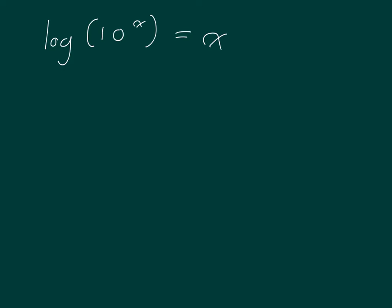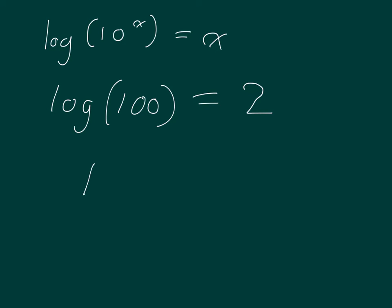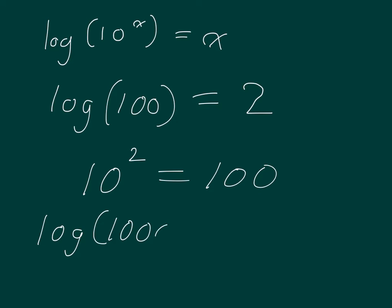For example, if I took the log of 100, the answer would be 2. Why? Because you have to raise 10 to the second power in order to get 100. Just to beat the horse entirely into the ground — if I took the log of 1000, it would be 3. Why? Because I have to raise 10 to the third power in order to get the number 1000.